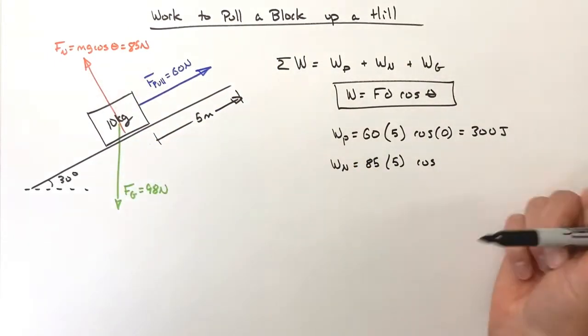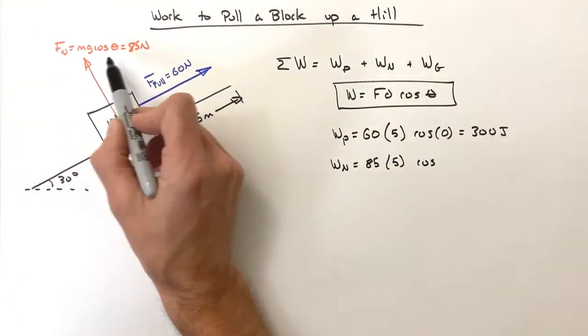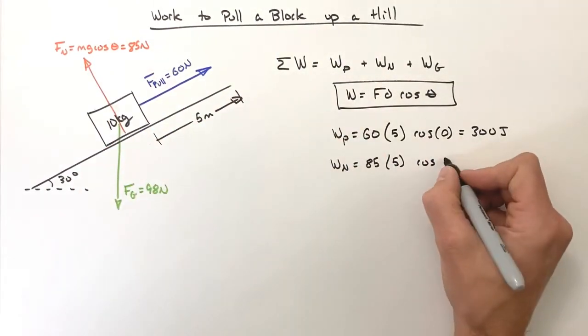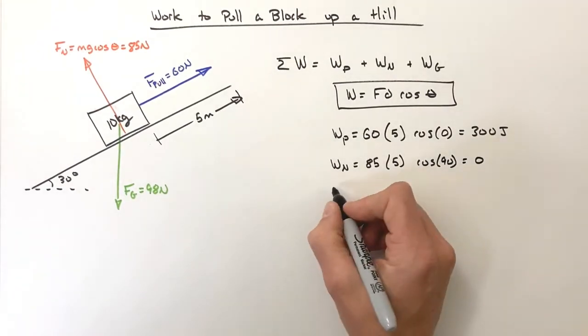And the displacement is parallel to the hill, so the angle between the force and the displacement is 90 degrees. That means no work is done by the normal force.